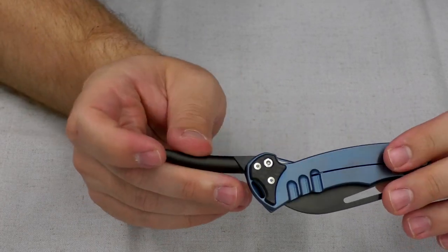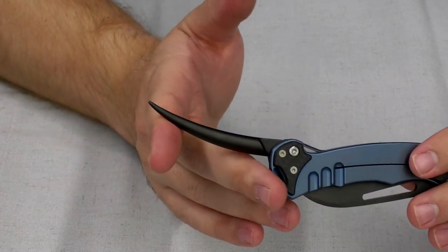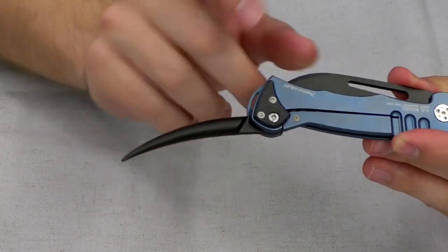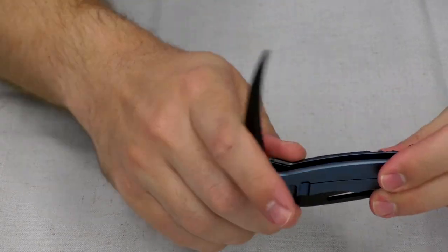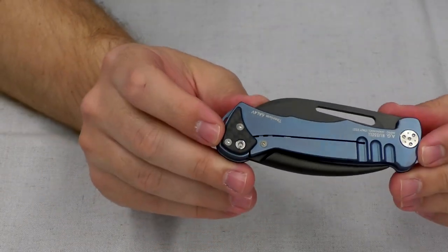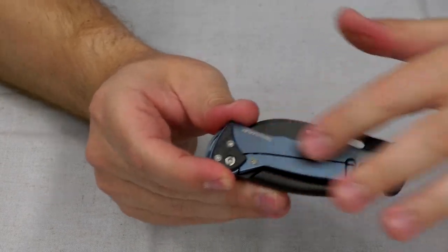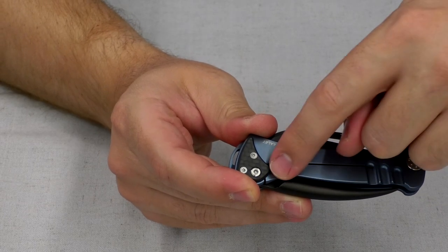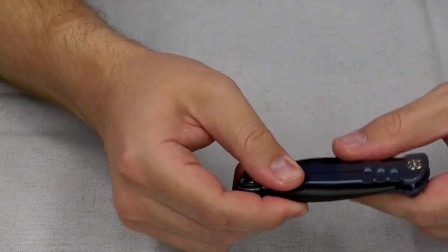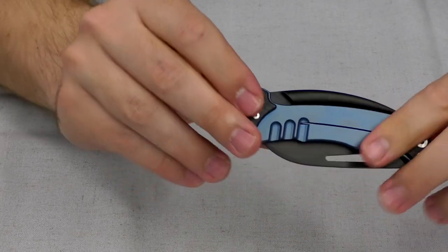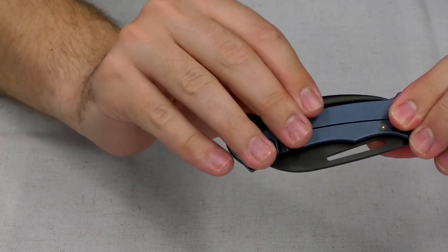This is a solid little pry bar type tool. It is locking. That was one of our customers' main requests for Marlin spikes is to make it locking. So we have a titanium handle here. It has a frame lock on this side for the Marlin spike and a frame lock on the other side for the blade.